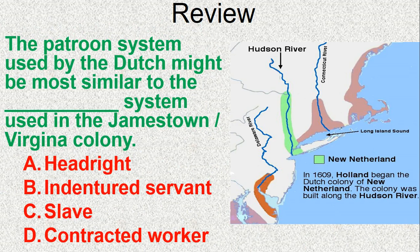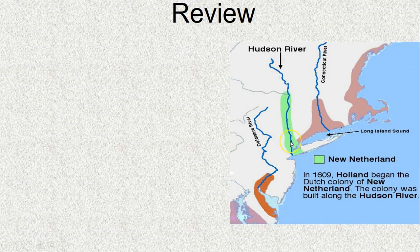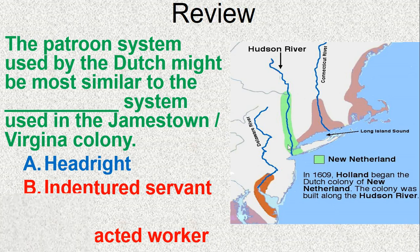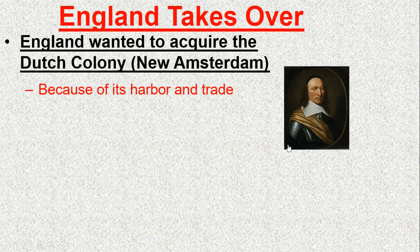The patroon system is most similar to the headright system in Jamestown. There was a lot of work needed in the New World and a big shortage of labor. In the Chesapeake Bay colonies, indentured servants were the way workers were attracted to the New World. In New Amsterdam, the patroon system served that same purpose.